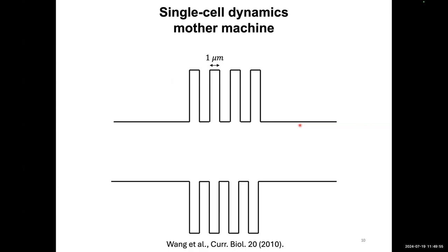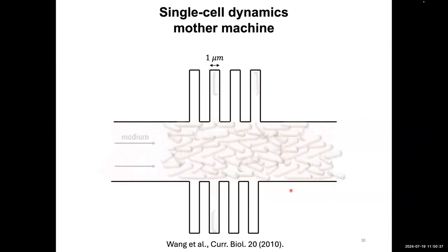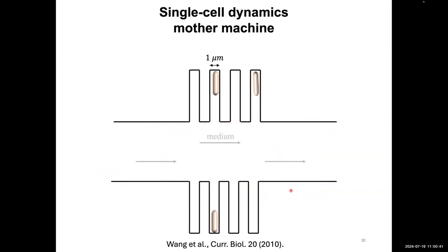To study single cell dynamics of wild type and delta ATP-A cells, we used a microfluidic device called the mother machine, developed in Suckjoon Jun's group in 2010. The device has a large channel with small perpendicular channels. We load a high concentration of bacterial cells, some enter the smaller channels, and we wash away the excess. Those trapped in the small channels have continuous medium provided to them and can grow and divide.